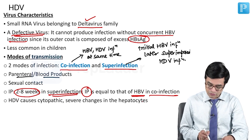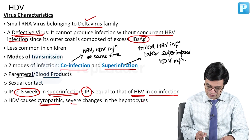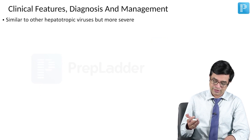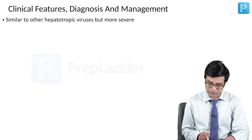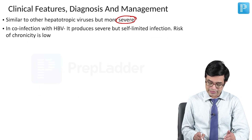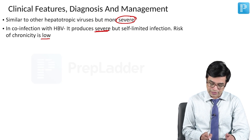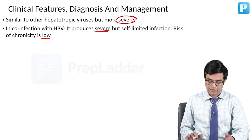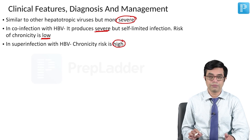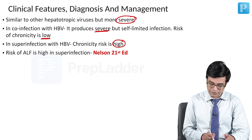HDV causes cytopathic changes which are more severe in hepatocytes. The clinical presentation is similar to other hepatotropic viruses, but more severe. In co-infection with HBV, it produces a severe but self-limited infection with less risk of chronicity. Whereas in super-infection with HBV, the chronicity risk is high, and there is also a very high risk of acute hepatic failure.